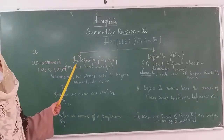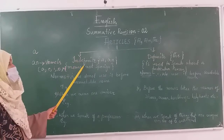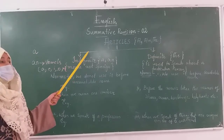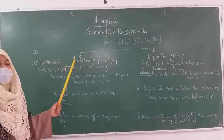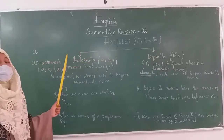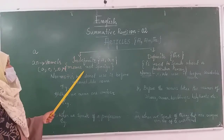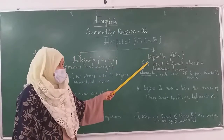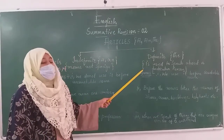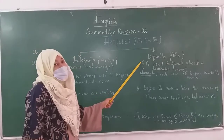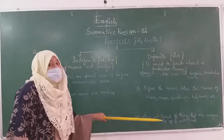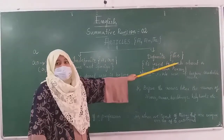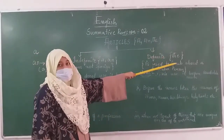Now, what does the indefinite article mean? As the name suggests, it is not specific. When you are not talking about a particular thing, that is called an indefinite article. Whereas the definite article means when you speak about a particular person or a particular thing — one thing of its own kind — at that time we use the definite article THE.